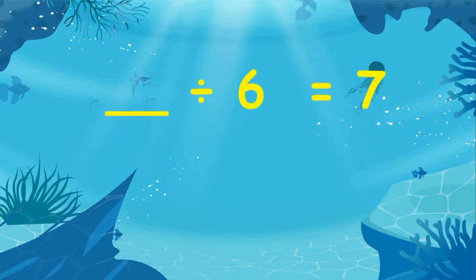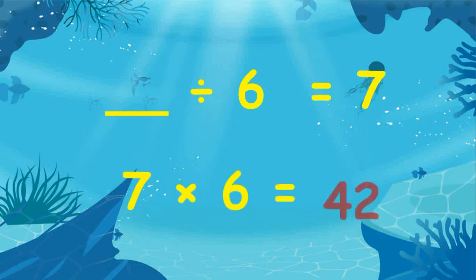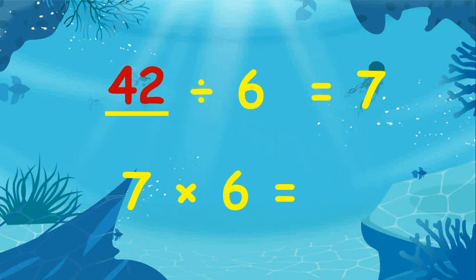What is the missing number when there is a division sign? Because the opposite of division is multiplication, we will multiply: 7 times 6 equals 42. Therefore the missing number is 42.